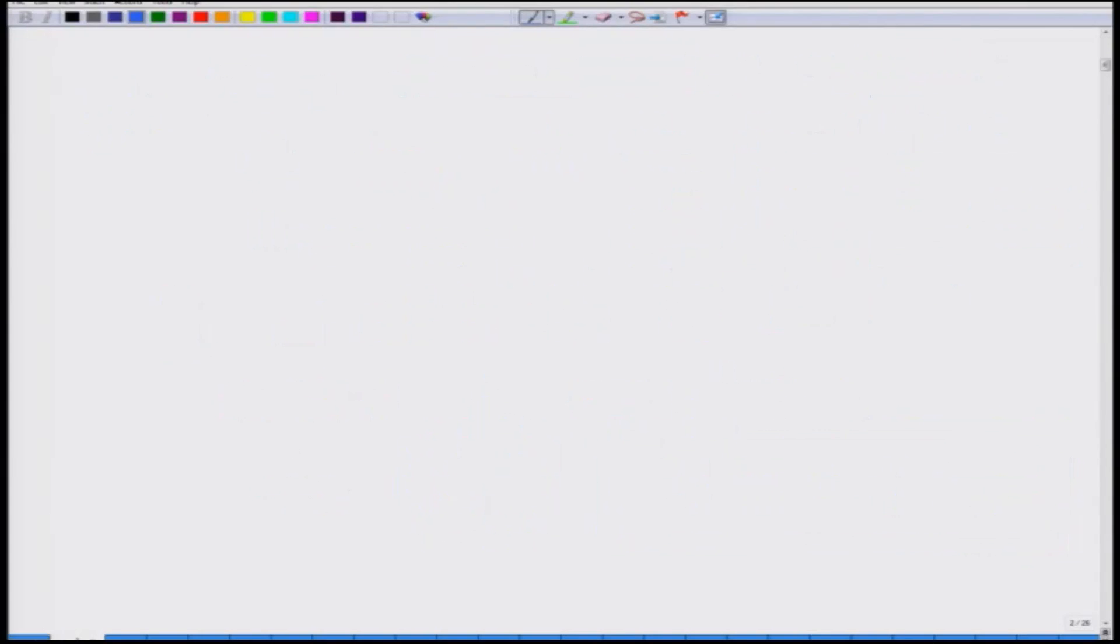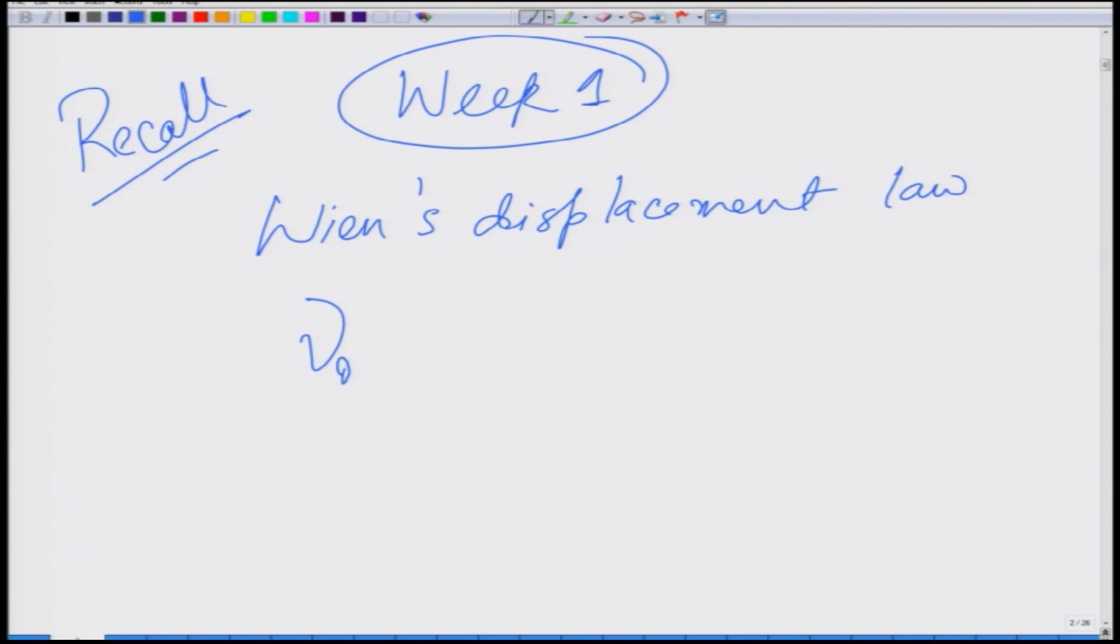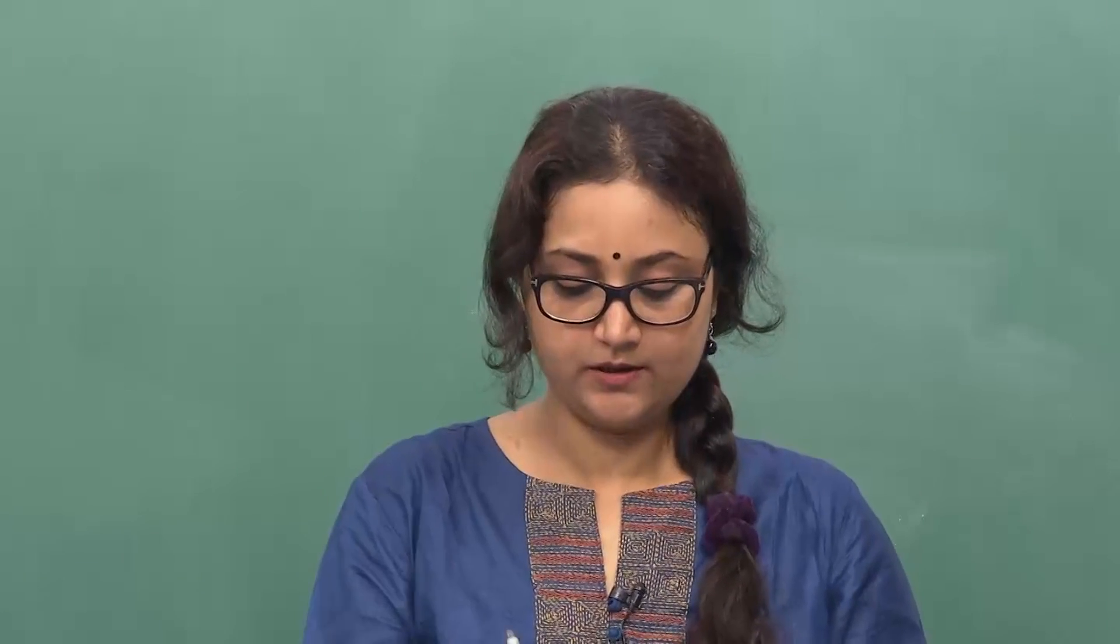Let us try to solve this problem. Please recall from week 1 lecture that we learnt about Wien's displacement law and what we have learnt there that nu max, this is the frequency at which the radiancy, which is energy radiated per time per area by the black body, is maximum. So nu max is the frequency at which this radiancy is maximum. This nu is proportional to the absolute temperature.